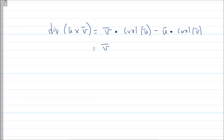Using this identity: v dot curl(u) is v dot zero = 0, and u dot curl(v) is u dot zero = 0, because both vectors are irrotational. The dot product of a vector with the zero vector gives zero — a real number — so divergence of the cross product of two irrotational vectors is always zero.